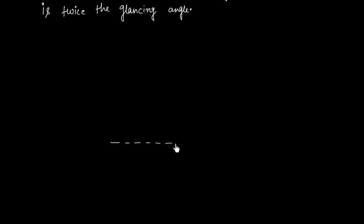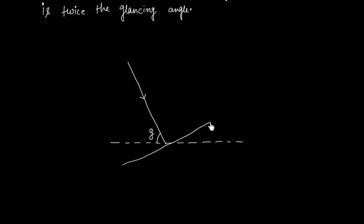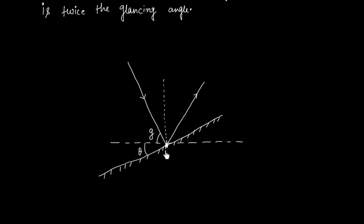Now let us rotate this plane mirror. Initially we have this plane mirror — this is the initial situation — and this is the incident ray, which makes an angle Z with the plane mirror. Now let us rotate this plane mirror by an angle theta. So this angle is theta, and this is the plane mirror after rotation by angle theta, rotated about this point. This is the reflected ray, this is the normal, and this is the incident ray.